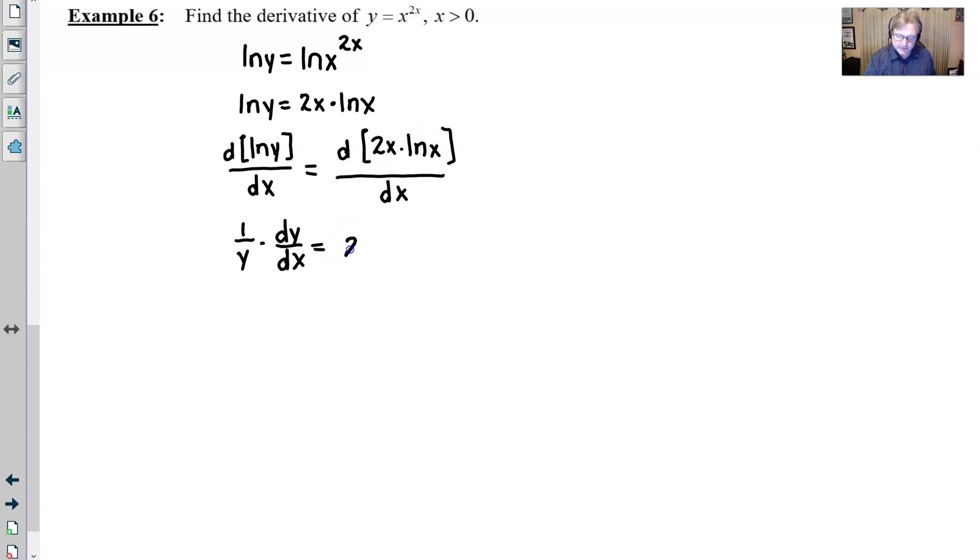Next thing we're going to do is simplify the right side just a little bit, and in doing so we end up with 2 natural log of x plus 2 as these x's cancel. Then we're going to multiply the y over to the right side and we end up having this, but we're not going to leave it written like that for very long because I want that y to be in terms of x. The best way to do that is call it by its original name, x to the 2x power, and that would be your answer.